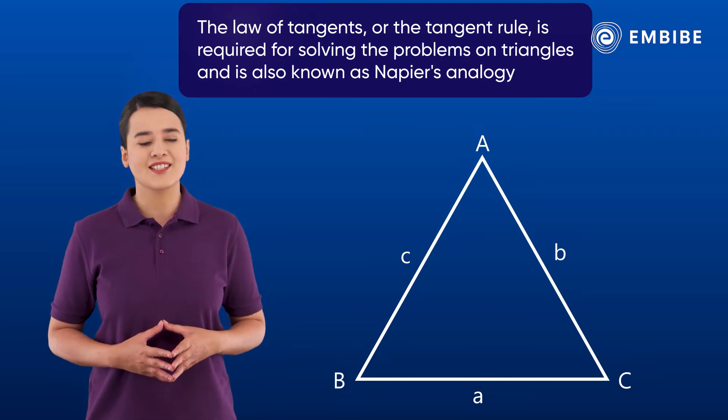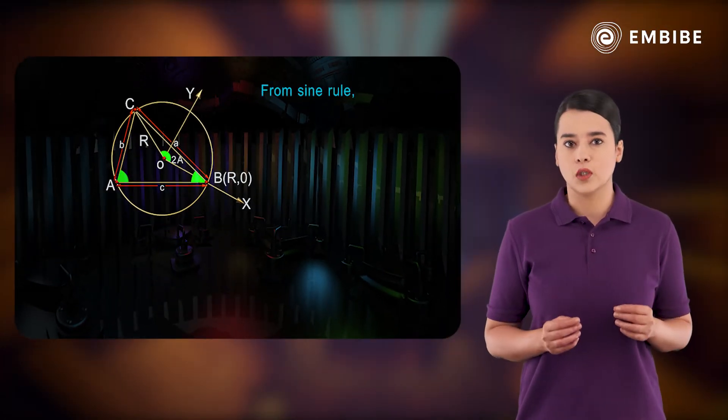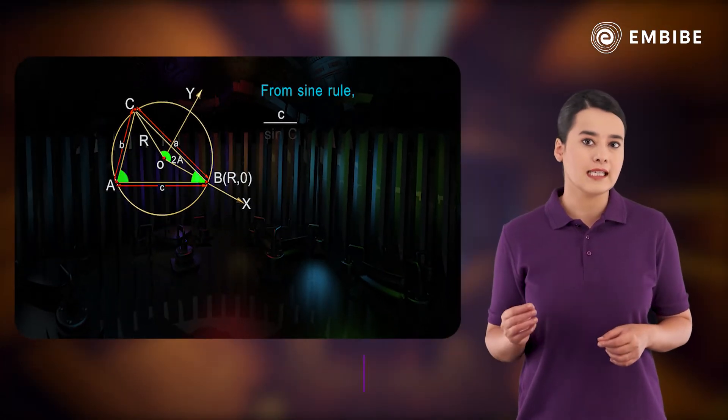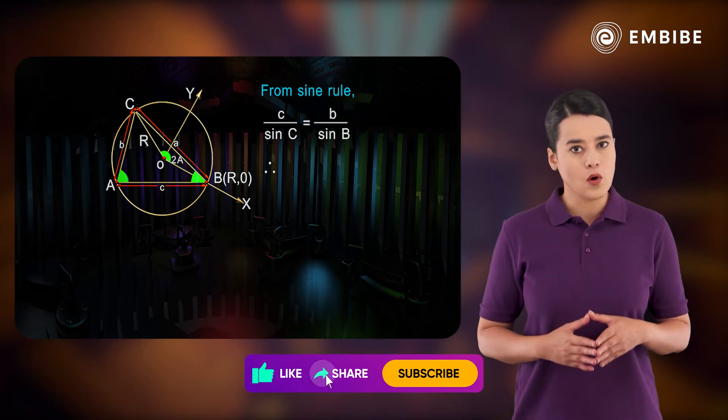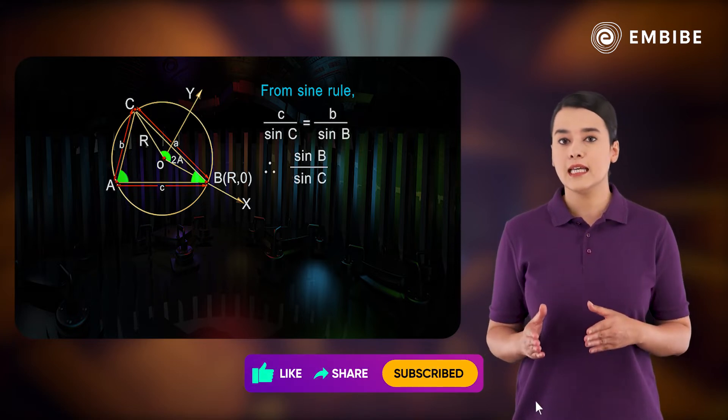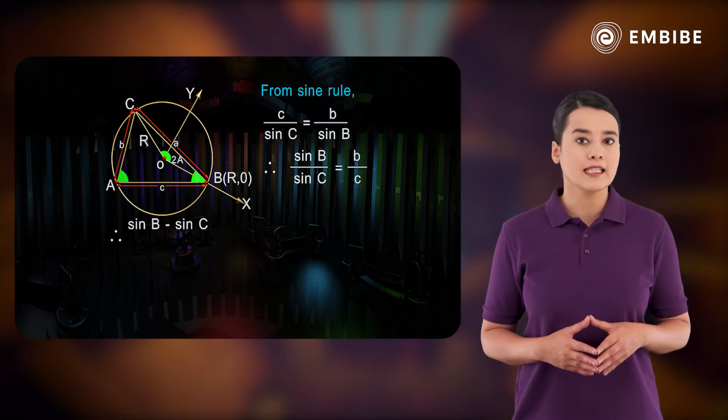In the given figure, from sine rule, c over sine C is equal to b over sine B. Therefore, sine B over sine C equals b over c. Therefore, sine B minus sine C over sine B plus sine C is equal to b minus c over b plus c.